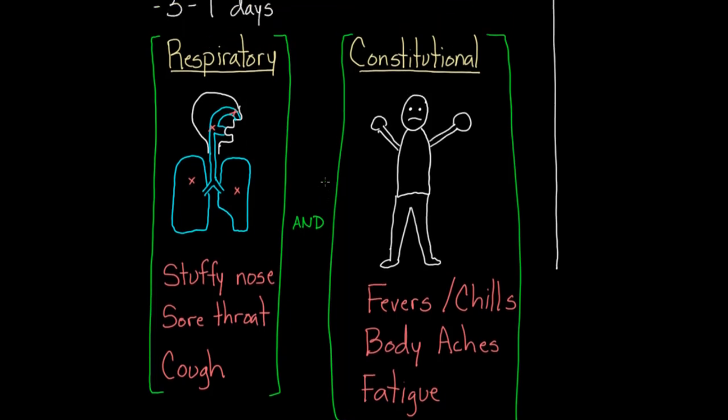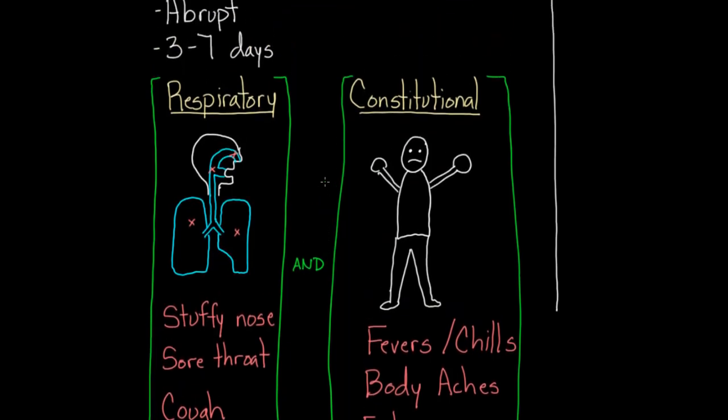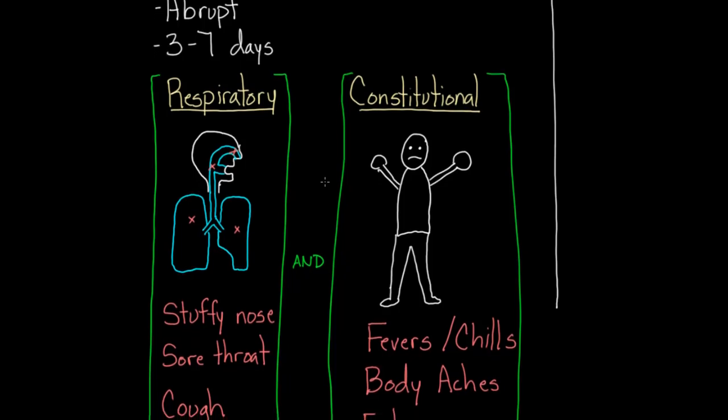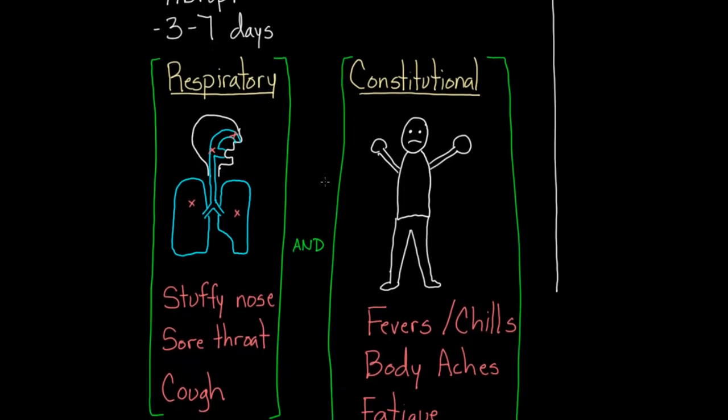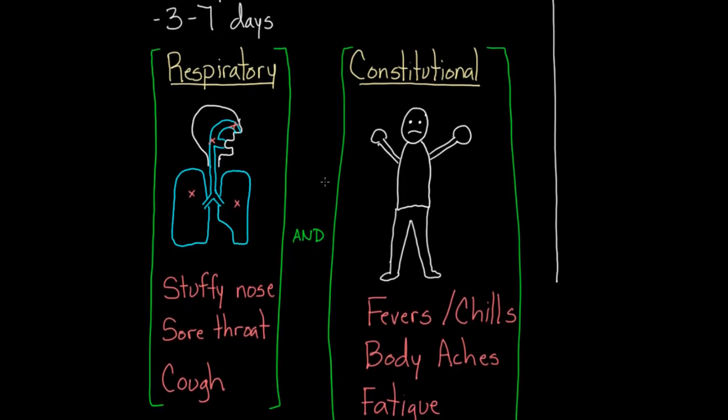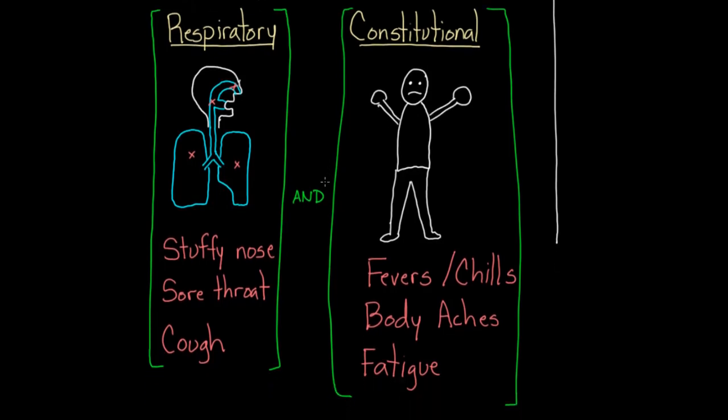So scrolling up just a little bit, just to make sure we don't forget, it's got to be abrupt. It's going to happen over the course of three to seven days. And they should have at least one respiratory symptom and at least one constitutional symptom. Now, this is good if I'm taking care of patients or I'm thinking about a clinical setting, like the hospital or the emergency room. But what about if you're doing research? Well, it turns out that the Centers for Disease Control, and they do a lot of research around influenza and flu, they have a definition that I want you to know about.